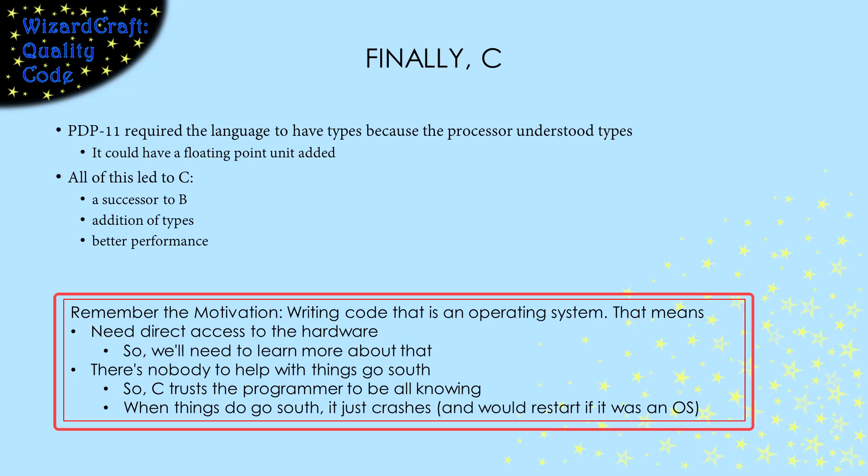Second, when something goes wrong in an operating system, there's no one there to help. You can't ask the user for help. So C trusts the programmer to know everything, and when things go wrong, it just crashes. There's no graceful error handling.